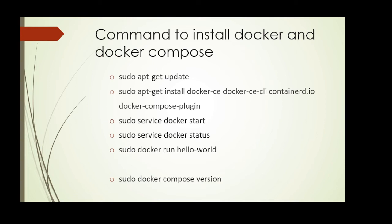Let me quickly recap the steps. We started with checking whether the Windows version supports WSL2. Then we turned on the Windows Subsystem for Linux and Virtual Machine Platform features. As a third step, we installed Ubuntu in WSL2. And finally, we opened the Ubuntu terminal and installed Docker and Docker Compose.